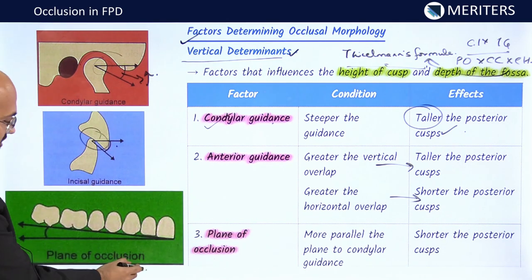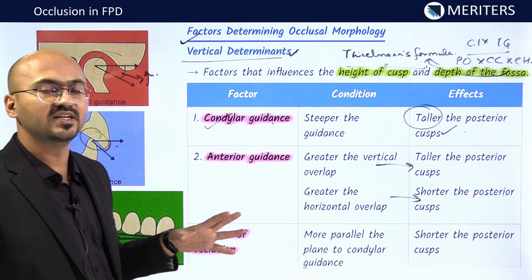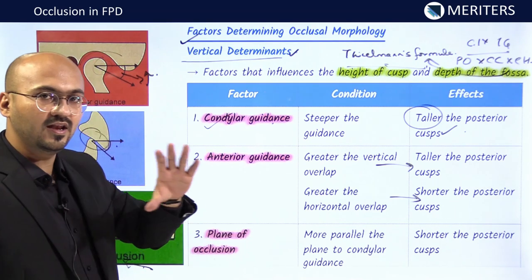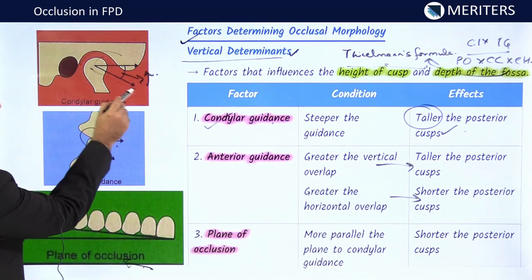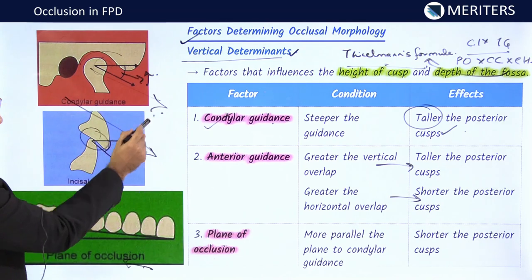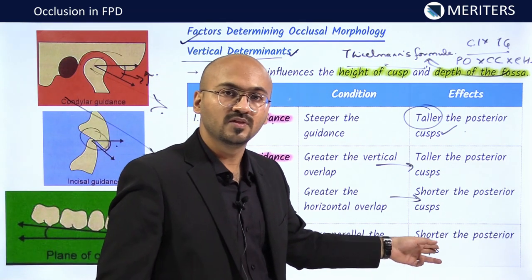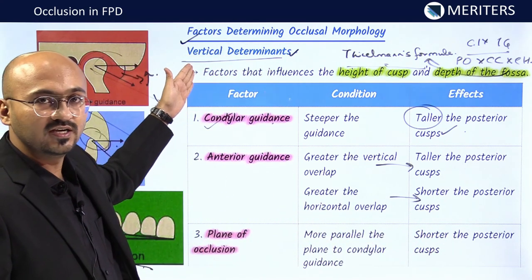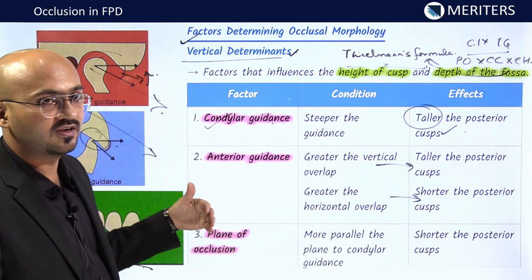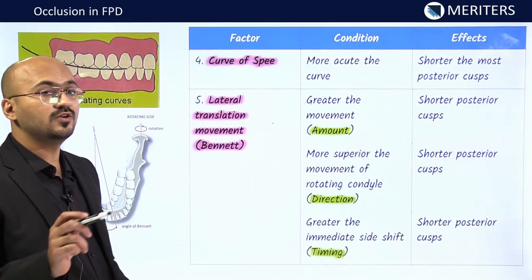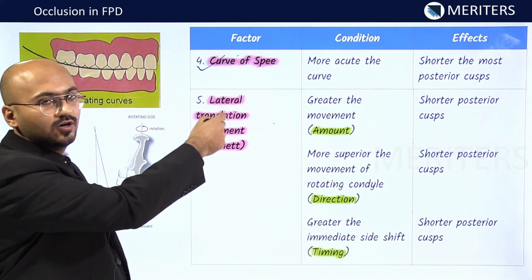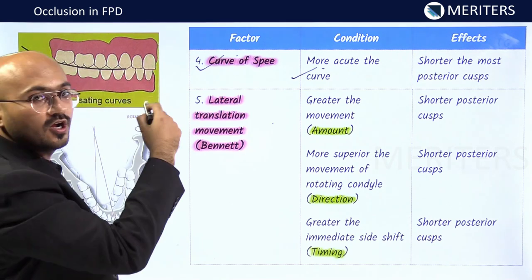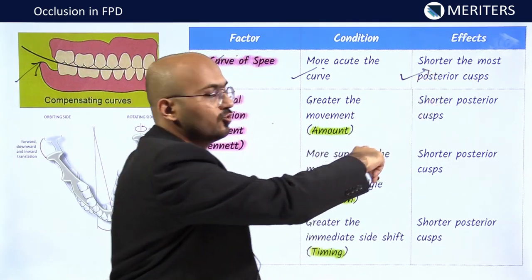Then there is the plane of occlusion, whose steepness is governed by compensating curves like the curve of Spee. If the plane of occlusion is more parallel to the condylar guidance — if these are in similar planes — then you give shorter posterior cusps. Other vertical determinants include compensating curves: the more acute the curve of Spee, the shorter the preferred height of posterior cusp tips.